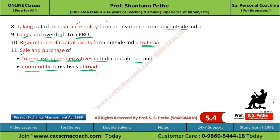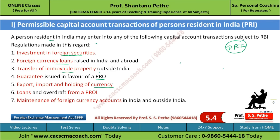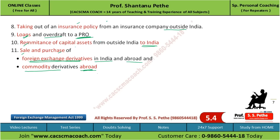So these 11 points - questions come on these. Your task is to write them on a sheet and review them morning and evening so they are memorized, because direct questions can come on this. The question may be: what are the permissible capital account transactions of PRI? Or cases can also come on this.